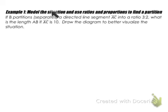So in example 1, we have to model the situation and use ratios and proportions to actually find a partition. So if B partitions or separates a directed line segment AC into a ratio of 3 to 2, what is the length of AB if AC is equal to 10? Draw the diagram to better visualize the situation, so let's draw that first.